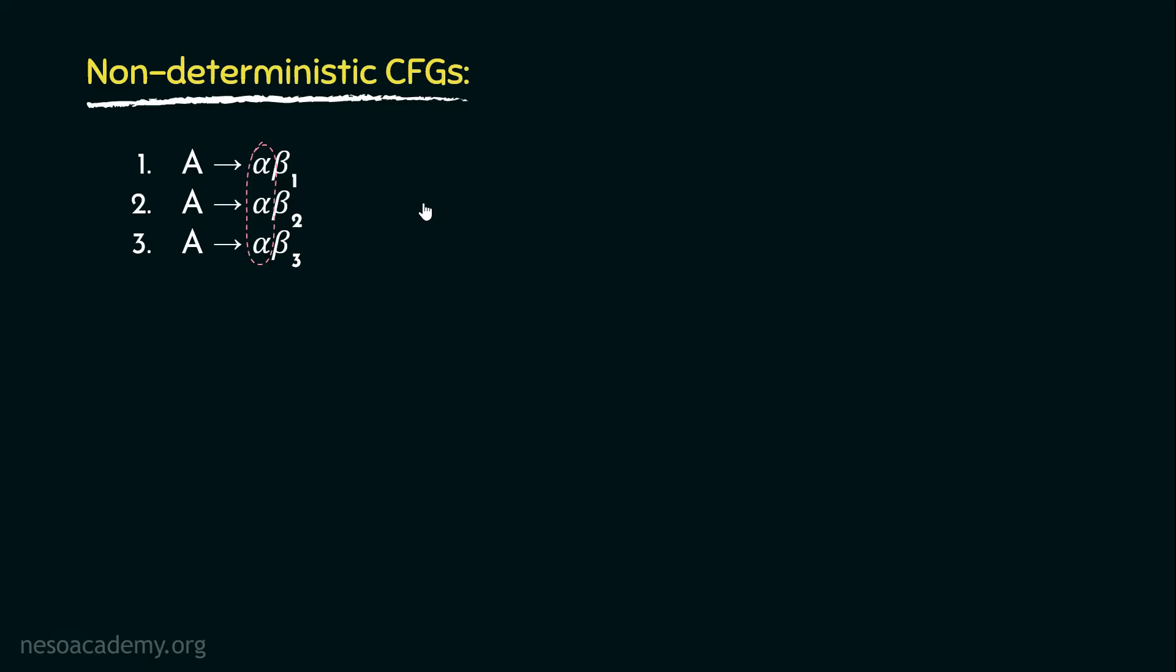The main reason behind backtracking is that the machine is choosing the production rule without examining it completely. Just by seeing the α, the production rules are being selected. So we need to eliminate this non-determinism. We will now modify our production rules accordingly.